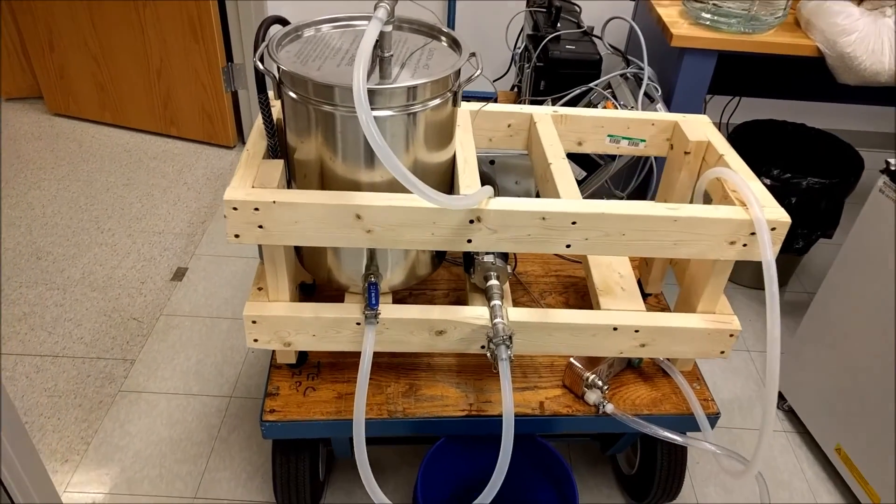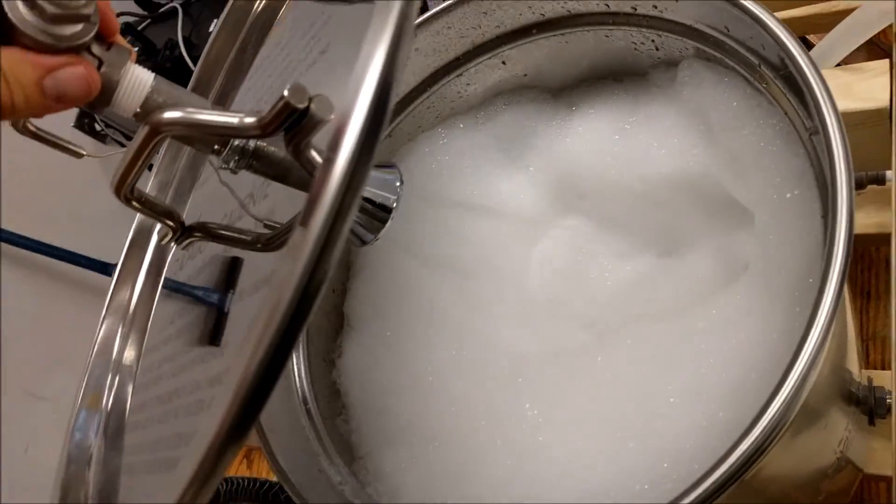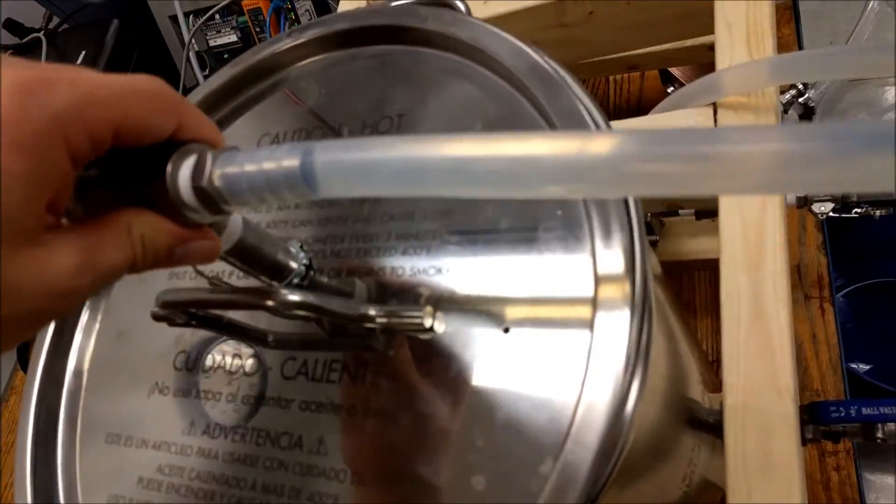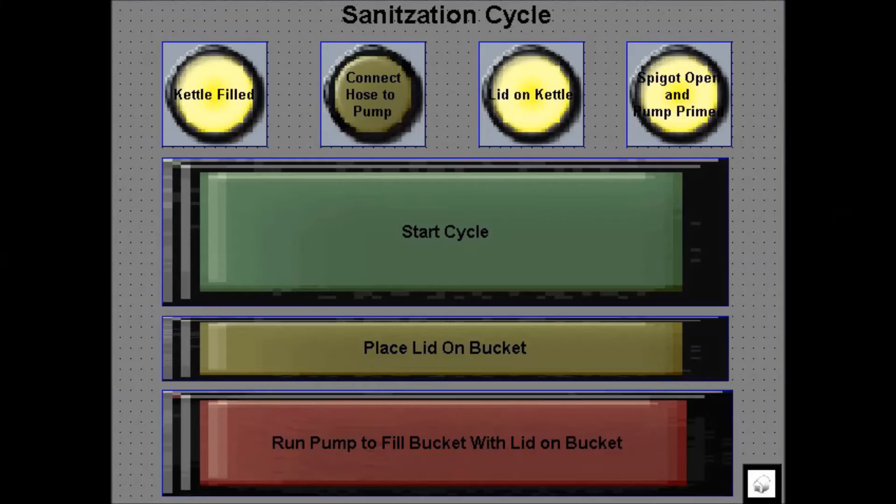Once the cycle is started, the pump will run for 5 minutes, circulating the sanitizer through the system. When the cycle is over, the user is instructed to place the lid on the bucket instead of the kettle and run the pump until the kettle is empty. The bucket of sanitized water can then be used throughout the brewing process.